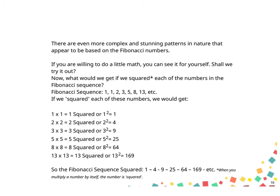If we squared each of these numbers we would get: 1 × 1 = 1² = 1, 2 × 2 = 2² = 4, 3 × 3 = 3² = 9, 5 × 5 = 5² = 25, 8 × 8 = 8² = 64. So the Fibonacci sequence squared will become 1, 4, 9, 25, 64, 169, etc.